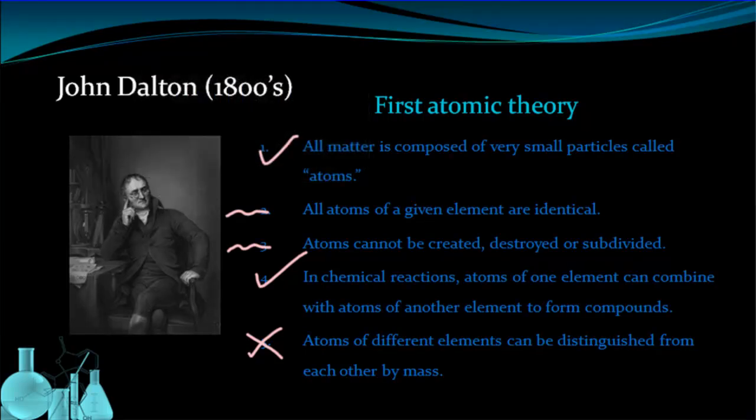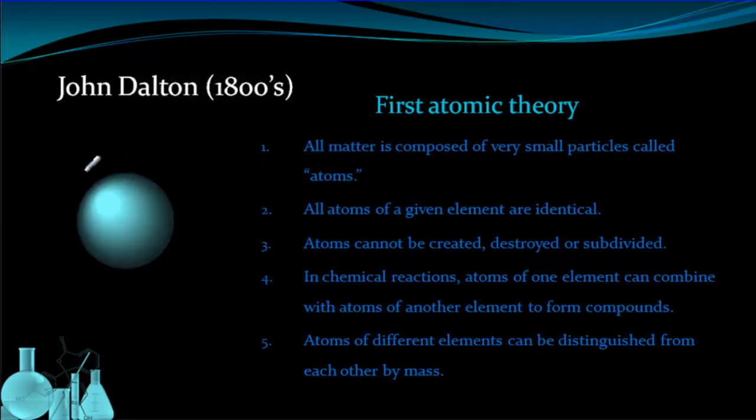Ultimately, we can represent Dalton's model of the atom with a simple round sphere. No features, completely featureless. This sphere is typically how we represent Dalton's model of the atom.